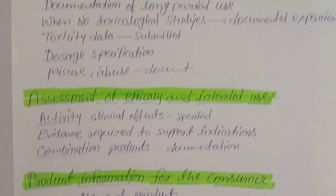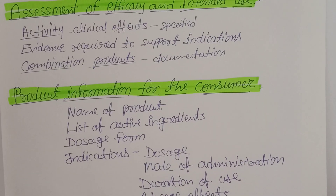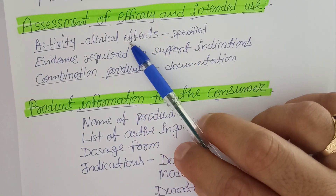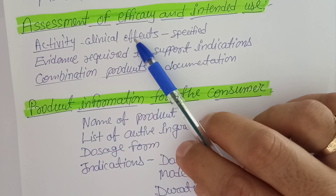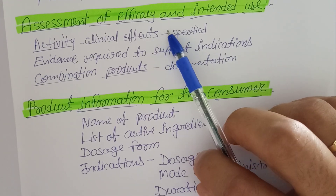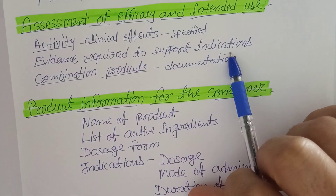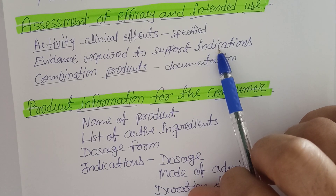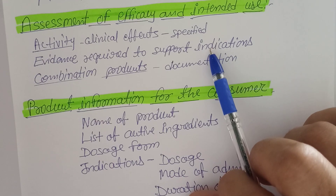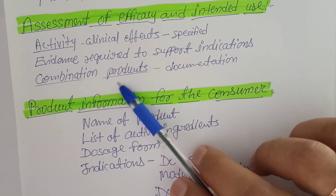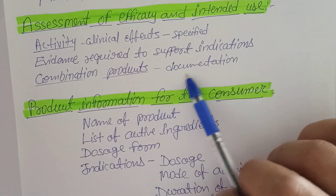For efficacy assessment, the clinical effects and therapeutic properties must be specified — for example, anti-diabetic, anti-inflammatory, or analgesic activity. Evidence from research publications available through databases such as Springer, Elsevier, and ScienceDirect is required to support indications. For combination products, both old and new combinations must be documented.